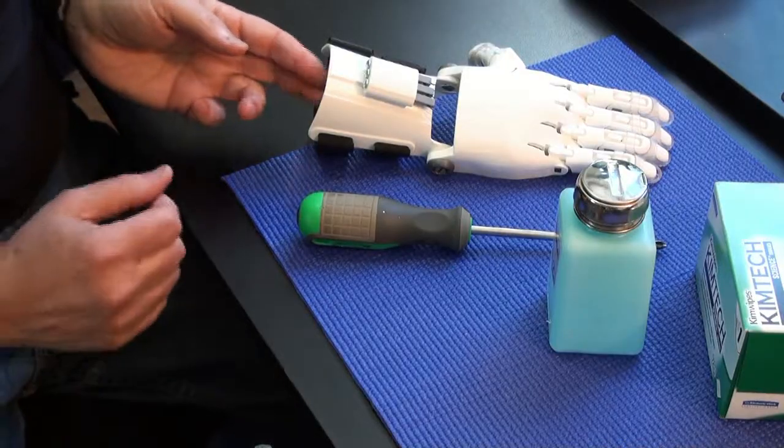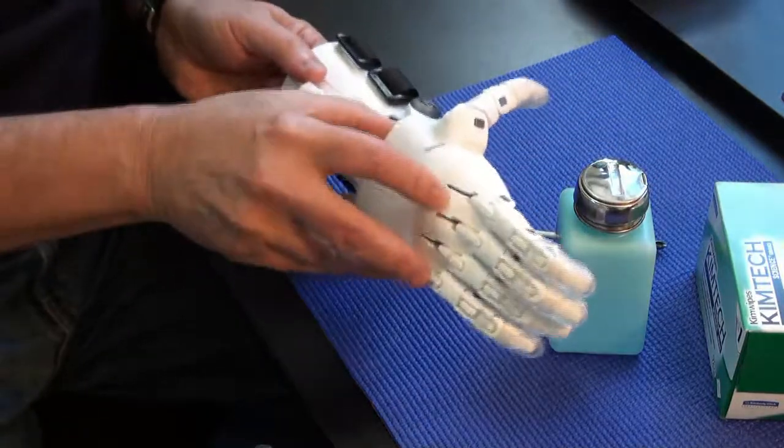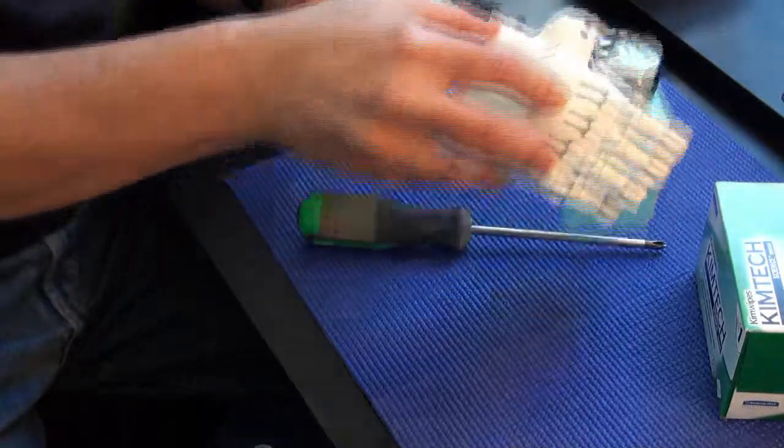I think more important than how the hand looks is how it functions. So let's try some demonstrations. Let's pick up this bottle of isopropanol. I can do that without spilling it.